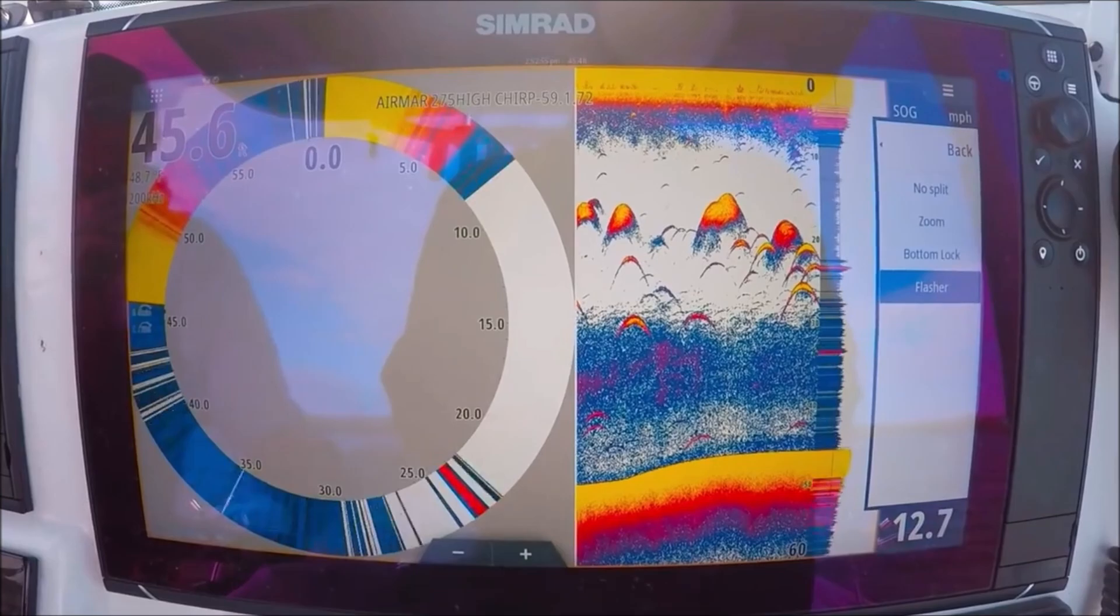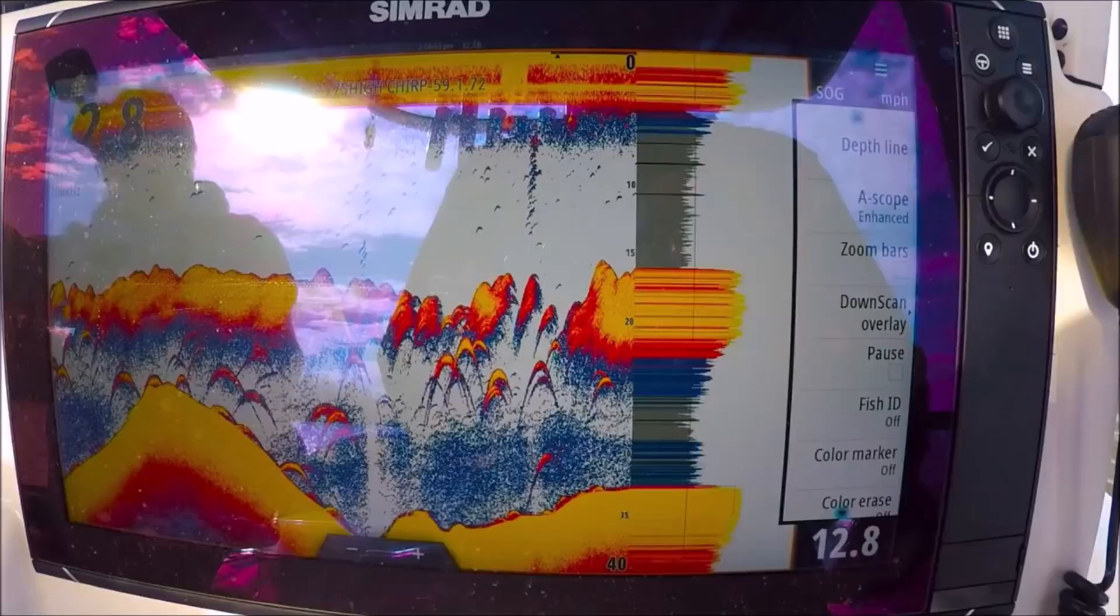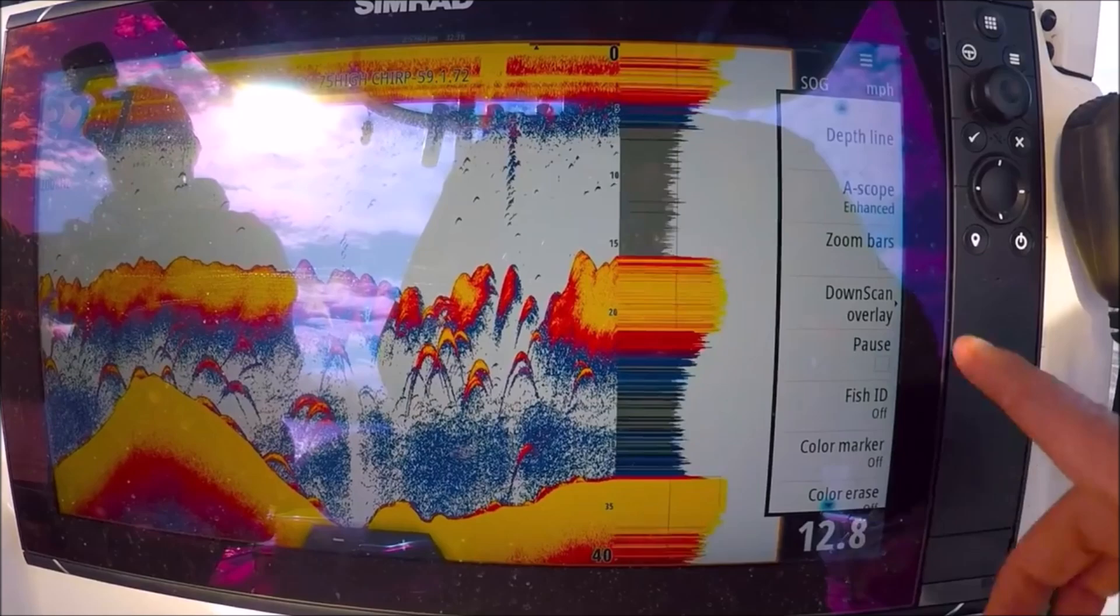Let's go no split again. Flasher - classic flasher, good for running on plane speeds when you're not sure if you're going to run in shallow water or not. It shows you instant returns that are under your transducer right now.